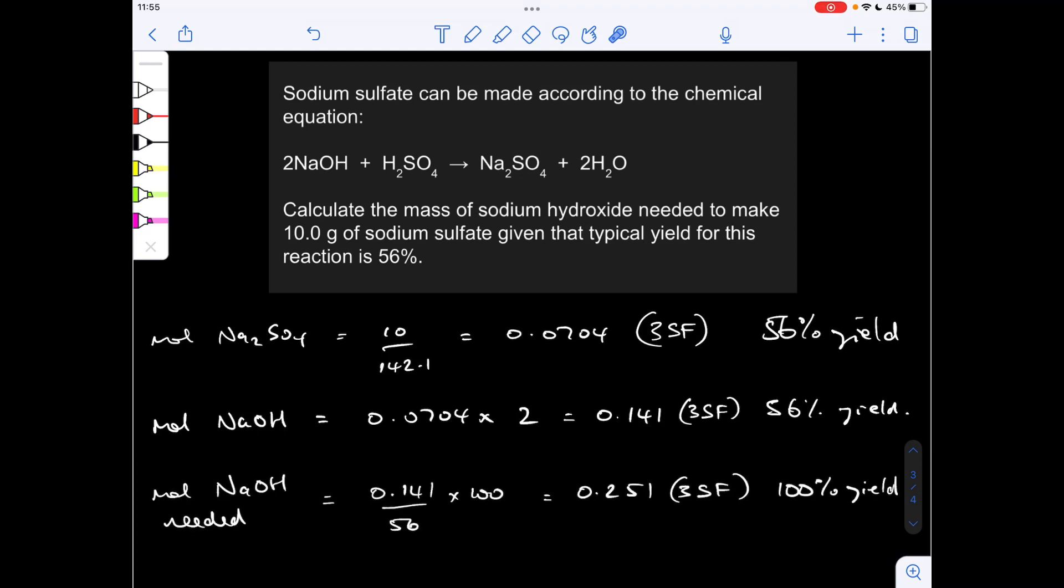So this is the tricky bit now. So this is a reverse percentage calculation effectively. So what I'm doing is I'm scaling up to what I would need if it was 100% yield. Remember, it's not, it's only 56%, but we are going to need more moles of sodium hydroxide so that the drop down to 56% can happen. So we're scaling up to what you would need for 100% yield.